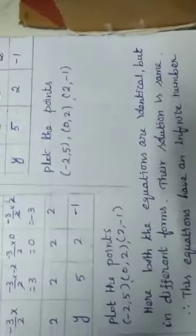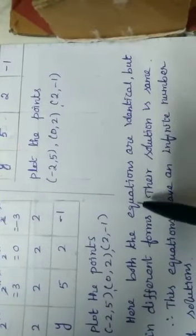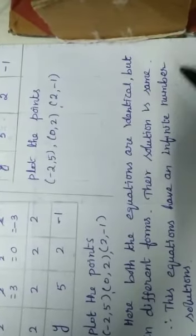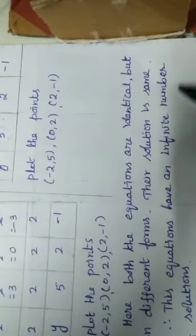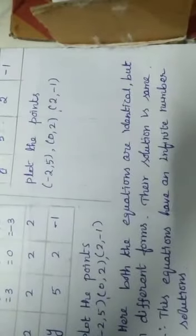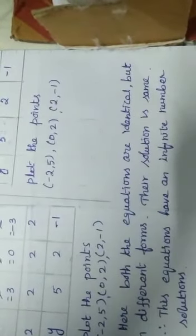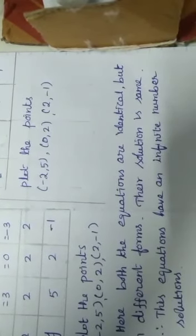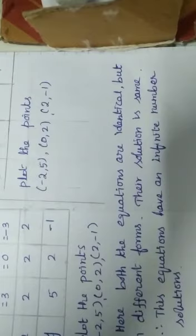Here both the equations are identical but in different forms. The solution is the same. These equations have an infinite number of solutions. One line on one line, these equations have an infinite number of solutions. So this also you have to do in your graph notebook and send your answer in group for correction. Thank you children.